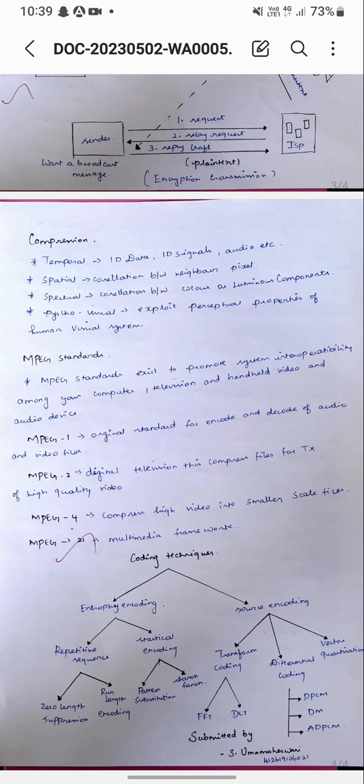Entropy encoding includes repetitive sequence and statistical encoding. Source encoding includes transfer coding, differential coding, and vector quantization. Repetitive sequence has two types: zero length suppression and run length encoding. Statistical encoding includes pattern substitution and the Shannon theorem. Transfer coding includes Fast Fourier Transform and DCT. Differential coding includes DPCM, DM, and ADPCM.